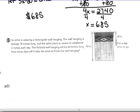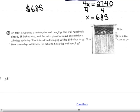And again, not writing in a full sentence right now. An artist is weaving a rectangular wall hanging. So we can see the picture over here. The wall hanging is already 18 inches long, and the artist plans to weave an additional 2 inches each day. The finished wall hanging will be 60 inches long. How many days will it take the artist to finish the wall hanging? So 2 inches per day. How many days? Let X equal days.